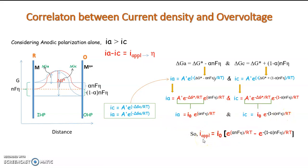So the applied current density or the overvoltage becomes Ia minus Ic equal to I0 into e raised to alpha NFη by RT minus e raised to minus of 1 minus alpha NFη by RT.